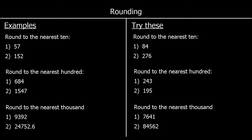Now we're looking at the nearest 10, nearest 100, and nearest 1,000. To round to the nearest 10, we find the tens column and look at the next one down, which is going to be the ones. Is it 5 or above? So for 57, the 7 is 5 or above, so it rounds up to 60 — it's closer to 60 than it is to 50. 152 is not going to round up — it stays as 150.